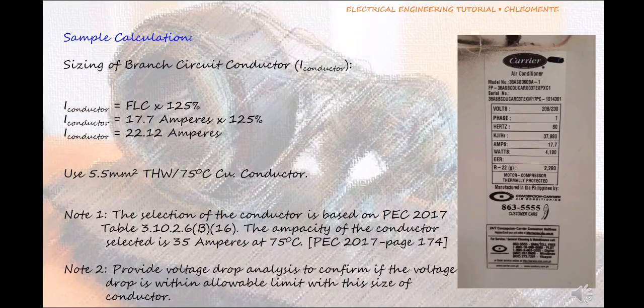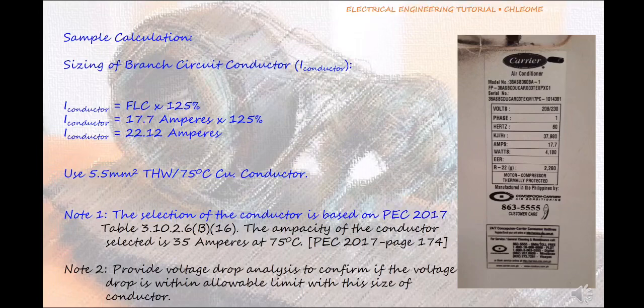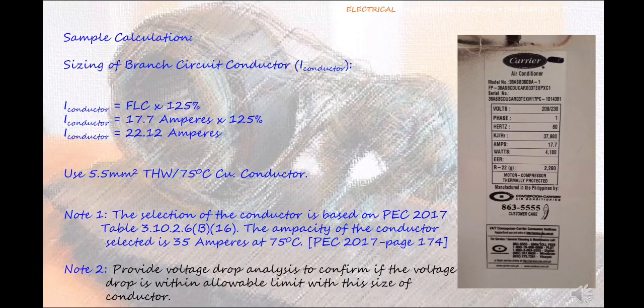Sizing of Branch Circuit Conductor. I-Conductor equals FLC multiply to 125%. I-Conductor equals 17.7 amperes multiply to 125%. I-Conductor equals 22.12 amperes. Use 5.5 square millimeters THW slash 75 degrees Celsius copper conductor. Note 1: The selection of the conductor is based on PEC 2017 Table 3.10.10. Note 2: The ampacity of the conductor selected is 35 amperes at 75 degrees Celsius, PEC 2017 page 174. Note 3: Provide voltage drop analysis to confirm if the voltage drop is within allowable limit with this size of conductor.